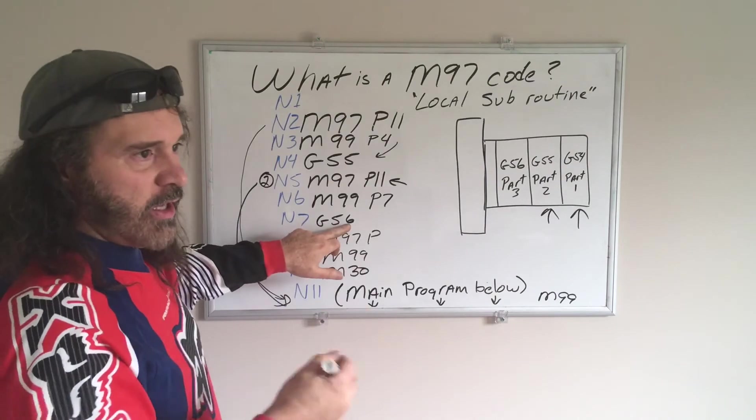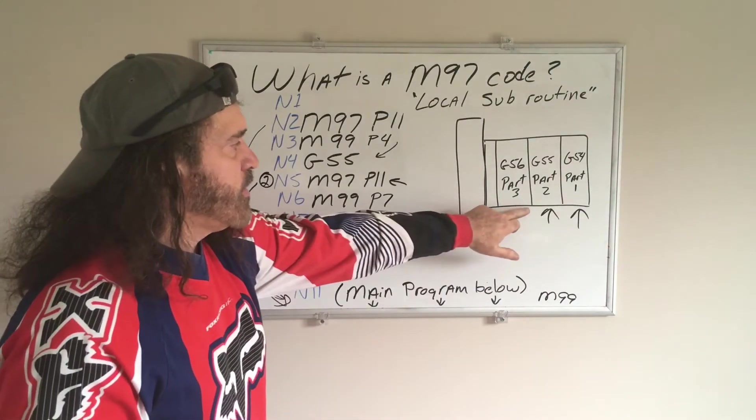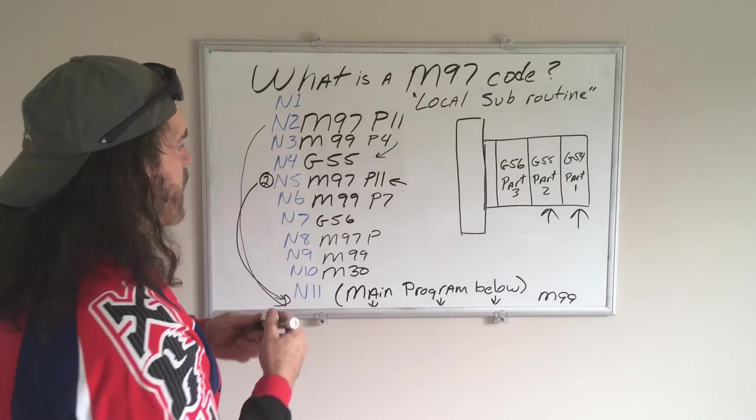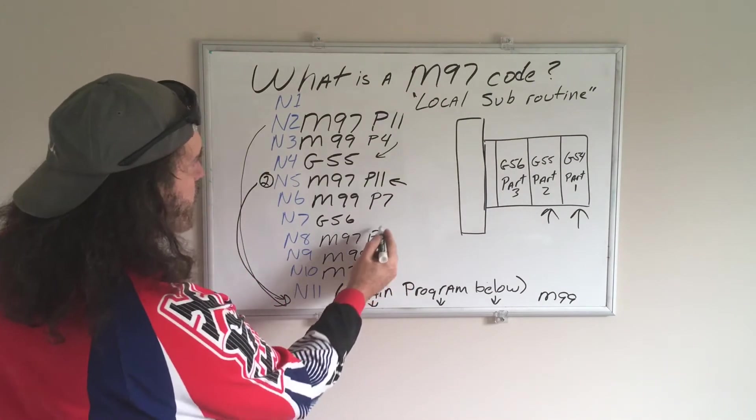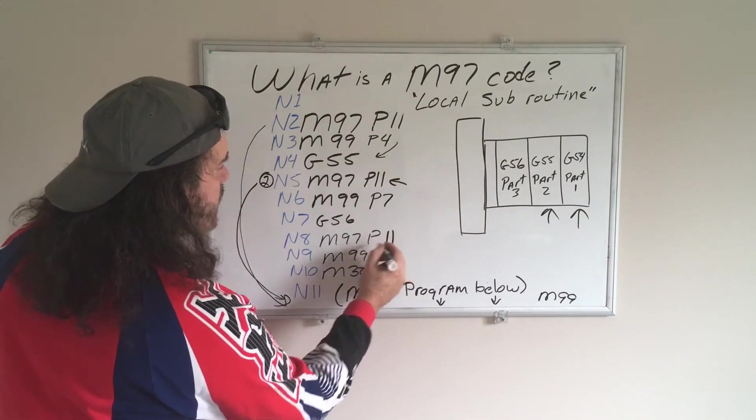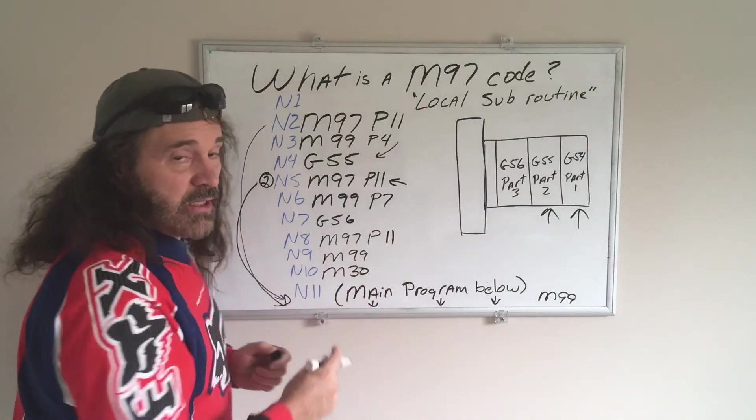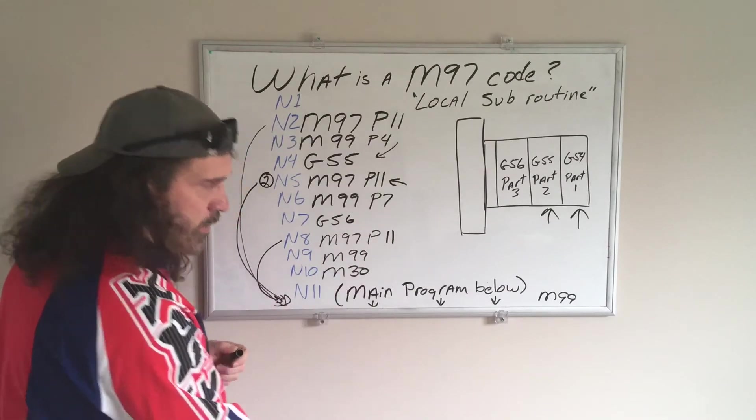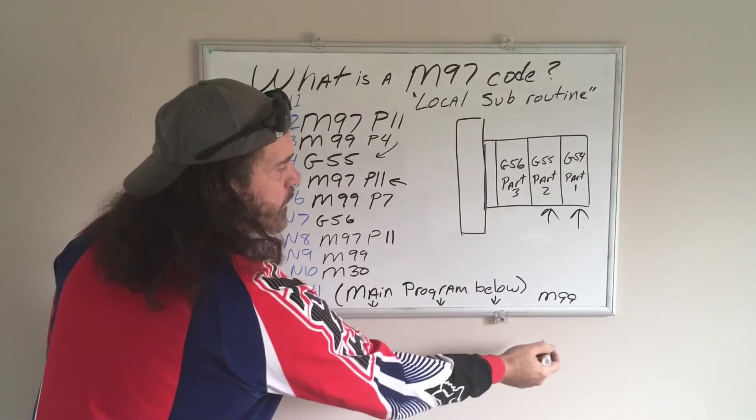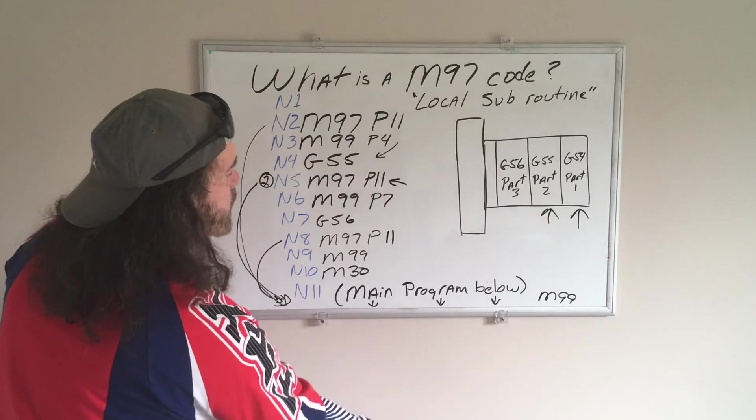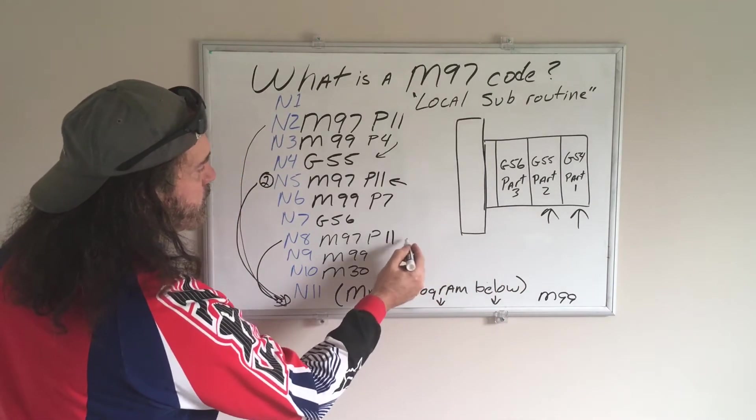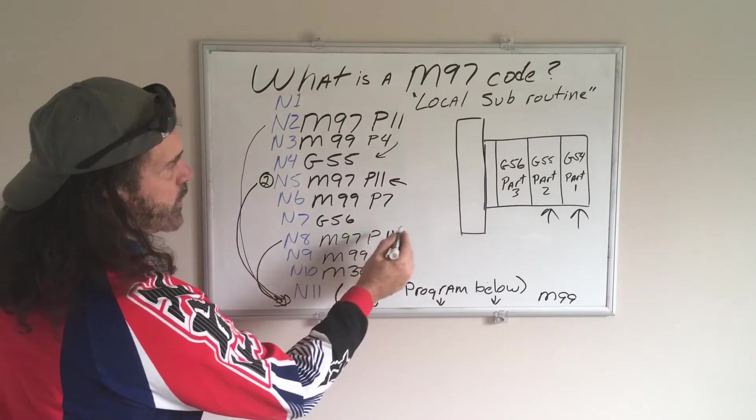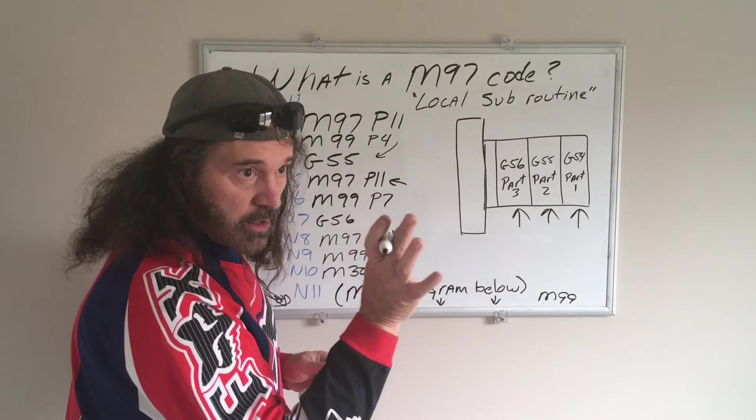So G56 in offsets, you enter whatever value you want to start. And now we're on our third part. So we already know we're going to start at P11. So M97 P11. It's going to jump down, do the main program. It's going to read the M99. It's going to come back up to this line here. And then we completed our third part.